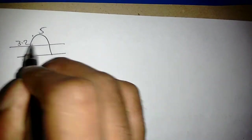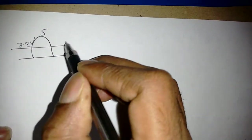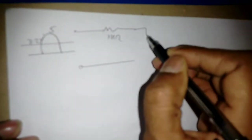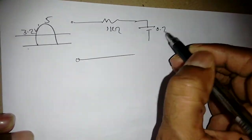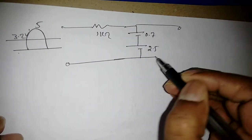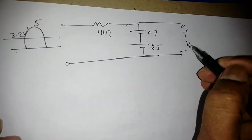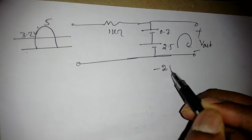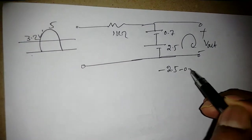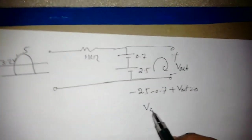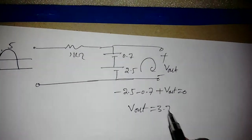When you apply the positive half cycle up to 5V, whenever Vin reaches 3.2V the diode becomes ON, acting as a 0.7V source. There is already 2.5V reference present. Applying KVL: minus 2.5 minus 0.7 plus Vout equals 0, so Vout equals 3.2 volts — wait, that is 3.7V. So Vout is 3.7V for the positive half cycle when Vin is greater than 3.2V.